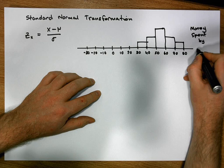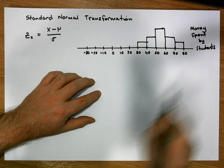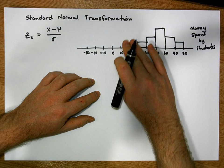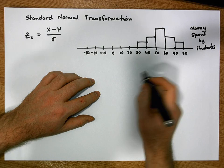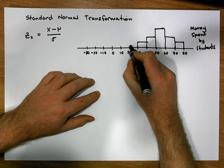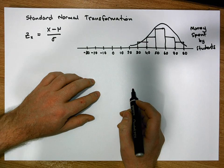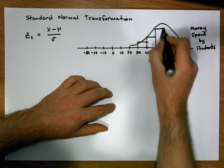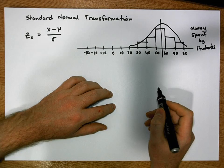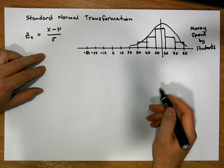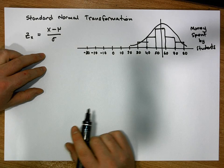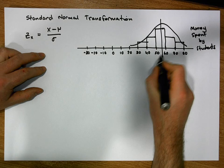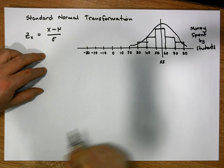We've constructed this histogram to be relatively bell-shaped, so we can put a bell-shaped curve over the top of it. The center point of the bell-shaped curve — the point of symmetry — represents the mean. For this histogram of money spent by students, the mean of this population is going to be around 55 euros.